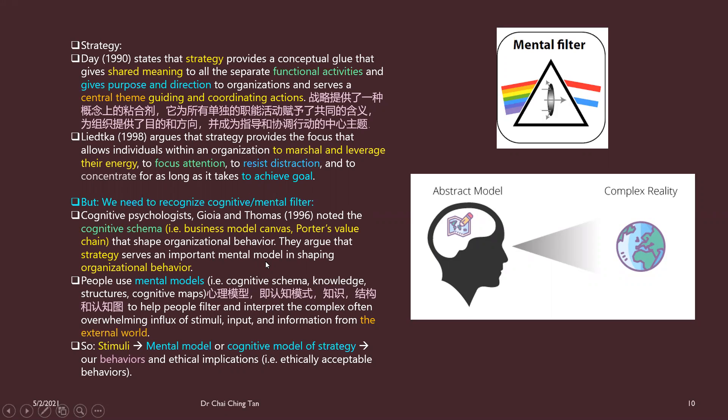The mental schema you hold will shape your organizational behavior. Strategy serves as an important mental model to shape both strategy and organizational behavior. People use mental models — cognitive schemas — and the knowledge you have determines your ability to think in a particular direction. If you don't have the knowledge, you will not have the ability to think in that direction.